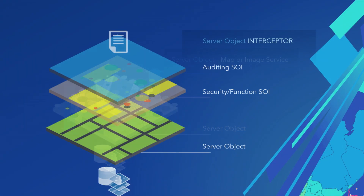You're all familiar with the server object. On a map or image server, you send the request and get the responses. But building interceptors means adding functional logic while preserving the interfaces. You can add a security or functional SOI, an auditing SOI, and chain them together. You get an opportunity to intercept both requests and responses. At the end of it, you're building something of true value where all the clients just continue to work.